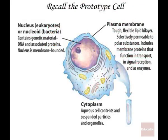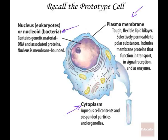Before we get into the cell wall, I want to bring up the prototype cell, which is representative of characteristics found in both prokaryotes and eukaryotes. Remember, bacteria are members of the prokaryotic cells. Both prokaryotic and eukaryotic cells have a plasma membrane and cytoplasm. Eukaryotes have a nucleus, while prokaryotes have nuclear material but no nucleus. However, both prokaryotes and eukaryotes have DNA-associated proteins and RNA.